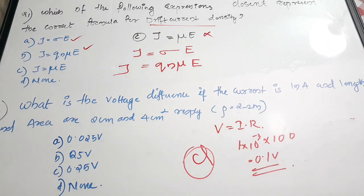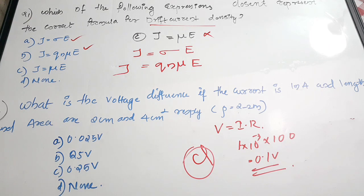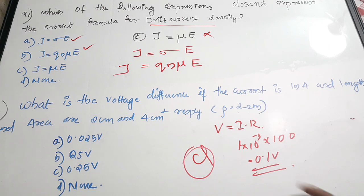You may not find this type of option — 'none of the above' — in most cases, but here the correct answer is option D, none of the above.